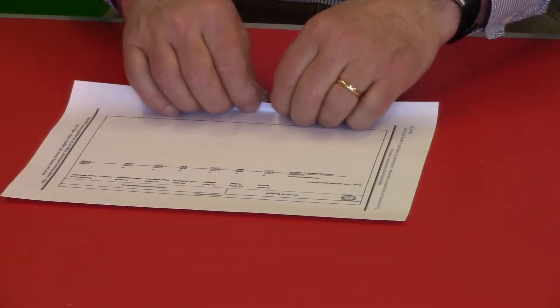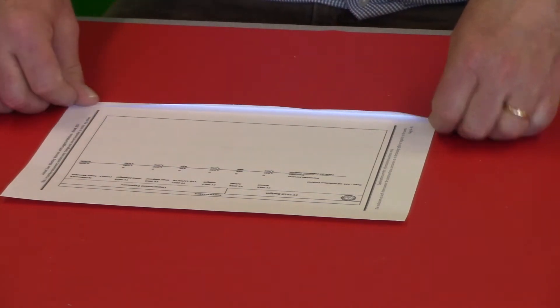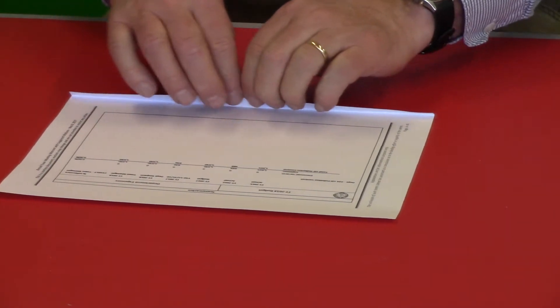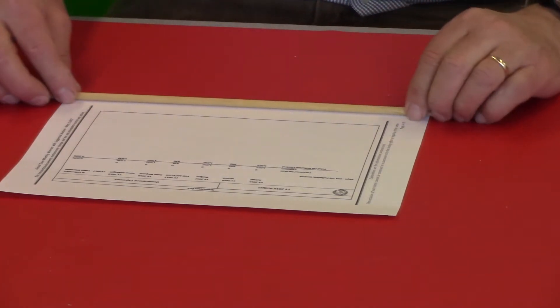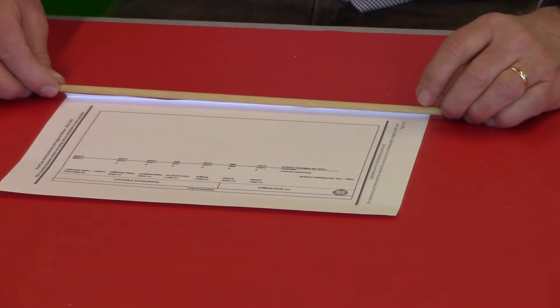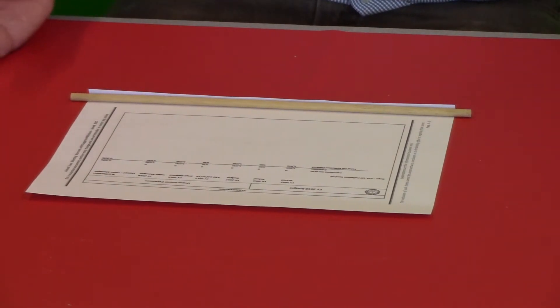The first thing you need to do is create a fold in the paper so that you have a little tab here that's about the size of your dowel. If you take the dowel and you tuck it back into that fold, get it centered up.